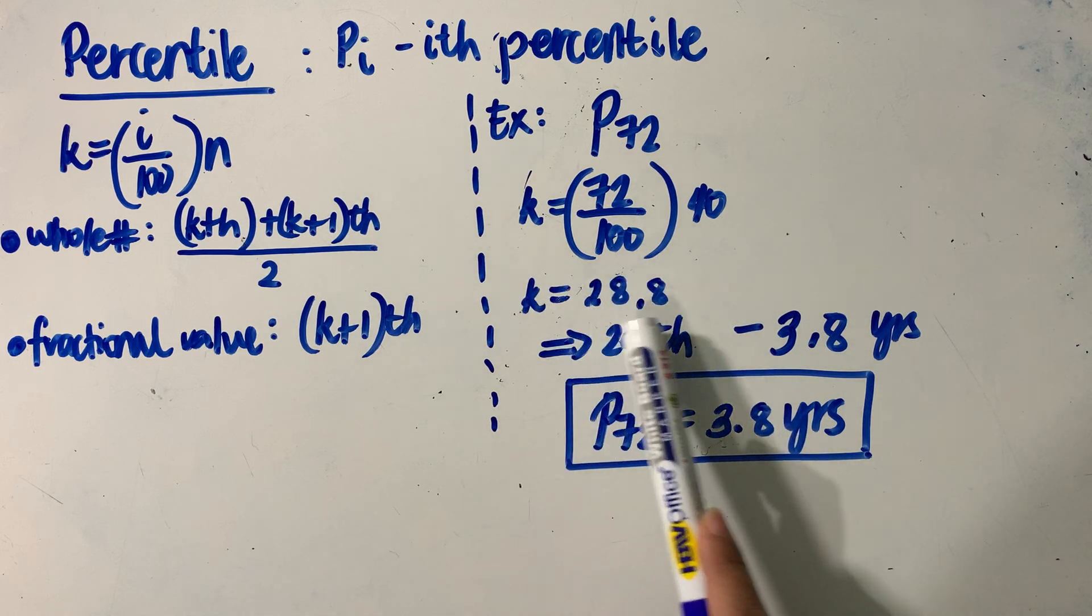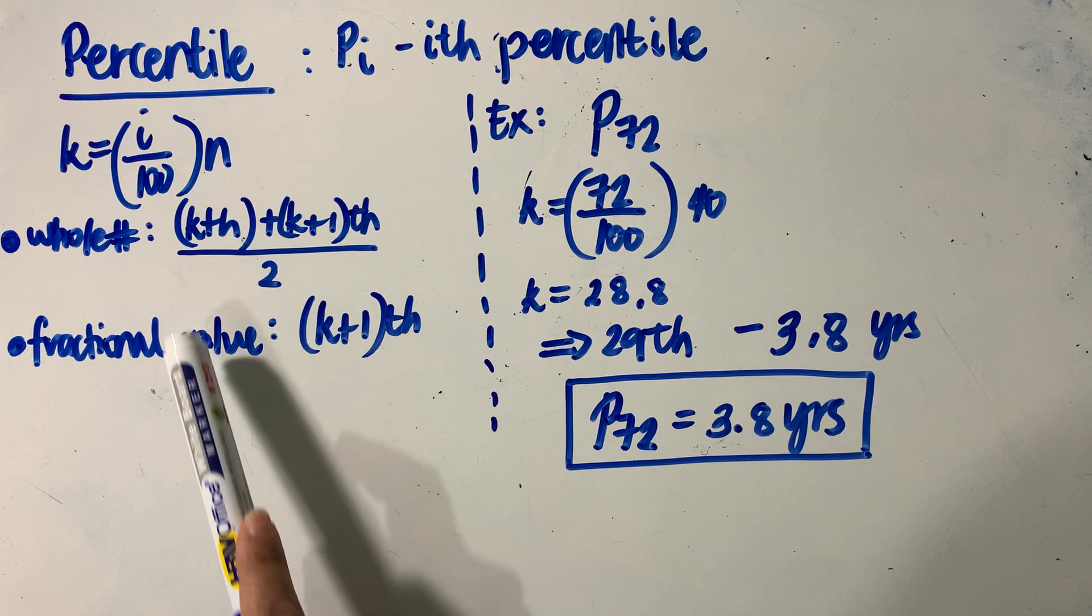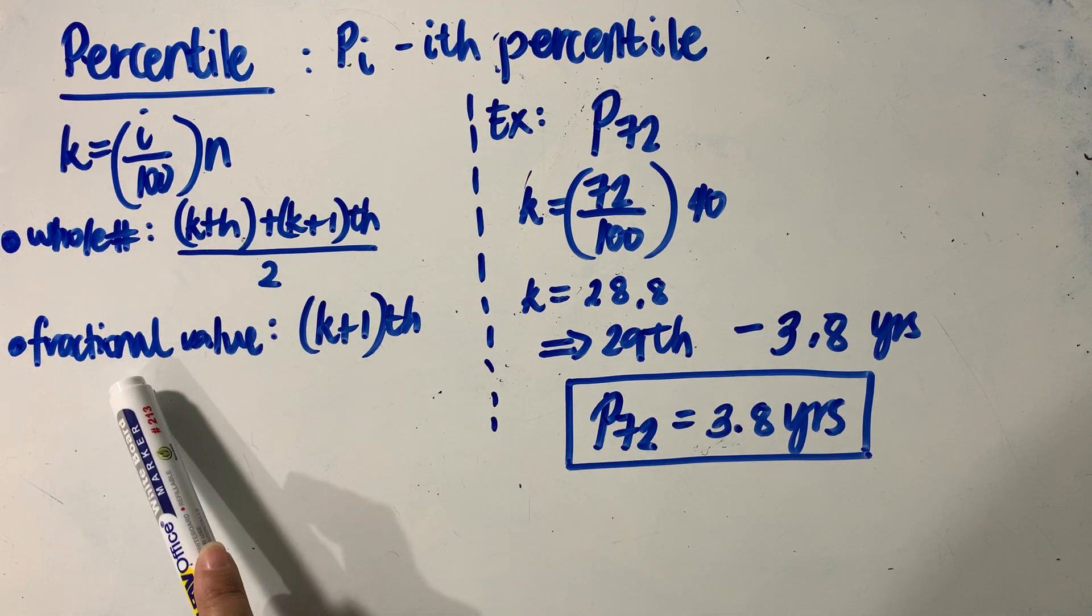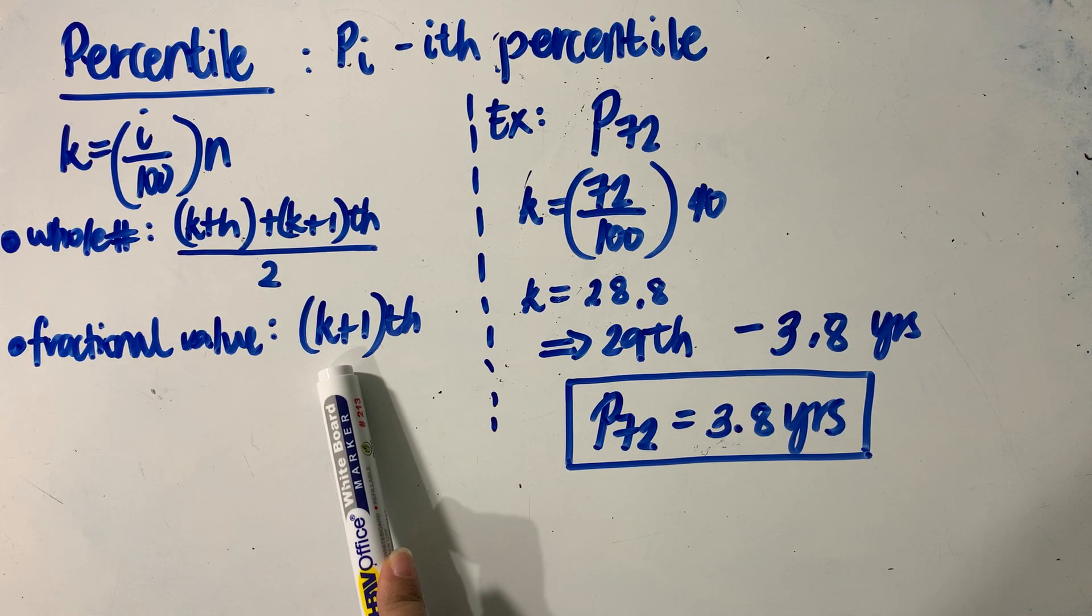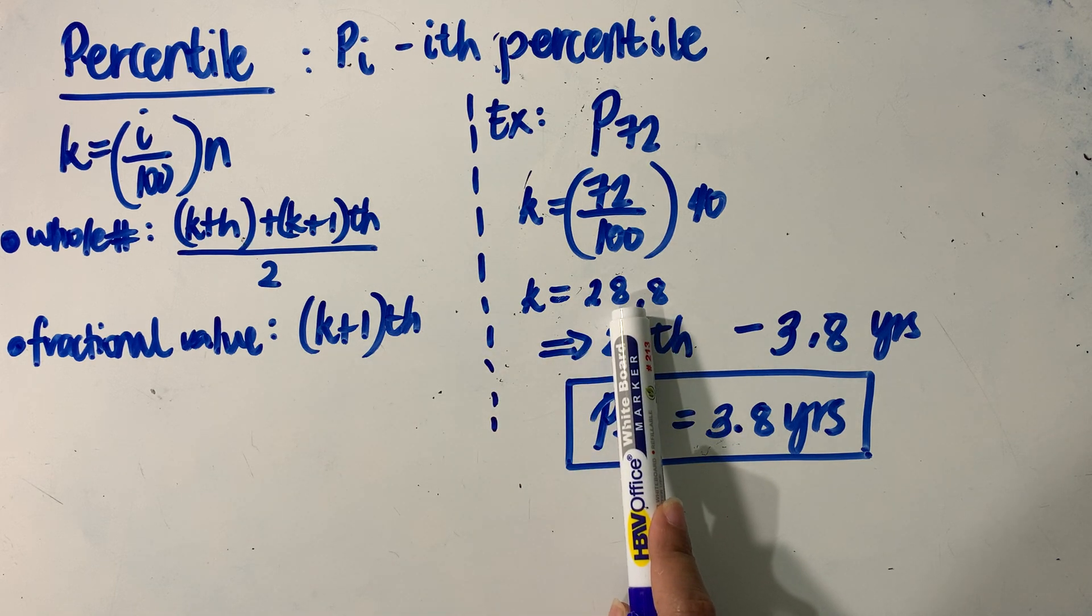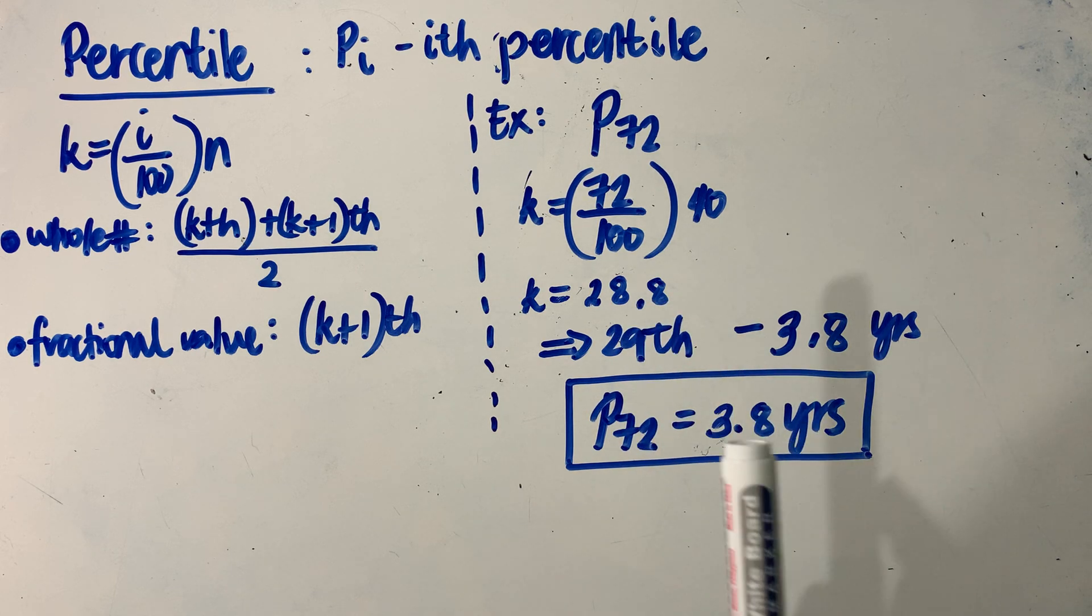Notice the value of K is a fractional value. With our rule, when K is fractional, we will get the K plus 1th observation. That means we will round up this value to determine the next observation.